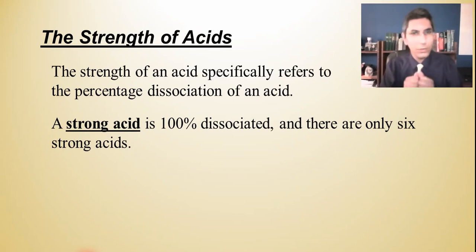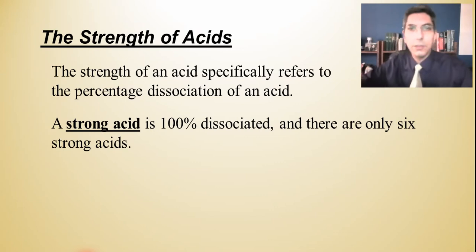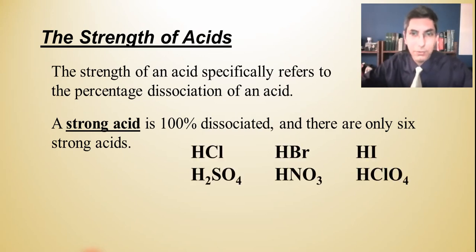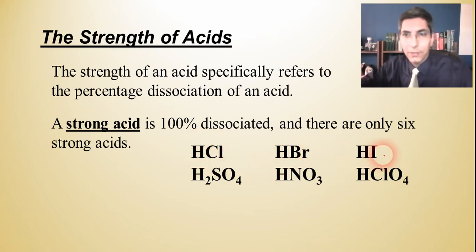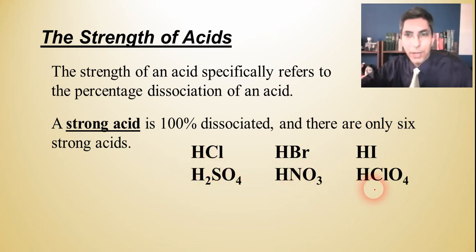Strong acids, as we've already learned, are 100% dissociated, meaning they break apart all the way with no undissociated compound left in solution. There are only six strong acids you need to know for AP Chemistry: hydrochloric acid, hydrobromic acid, hydroiodic acid, sulfuric acid, nitric acid, and perchloric acid.